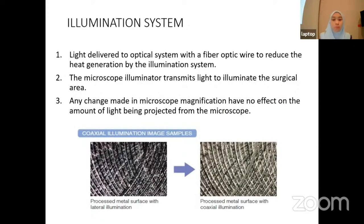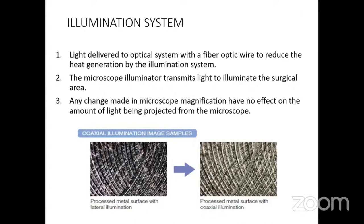Now we go to the illumination system. The light is delivered to the optical system via a fiber optic wire to reduce heat generation by the illumination system. The microscope illuminator then transmits light to illuminate the surgical area. Any change made in the microscope magnification has no effect on the amount of light projected. This image shows how, when using coaxial illumination, the image will look clearer and sharper compared to lateral illumination.